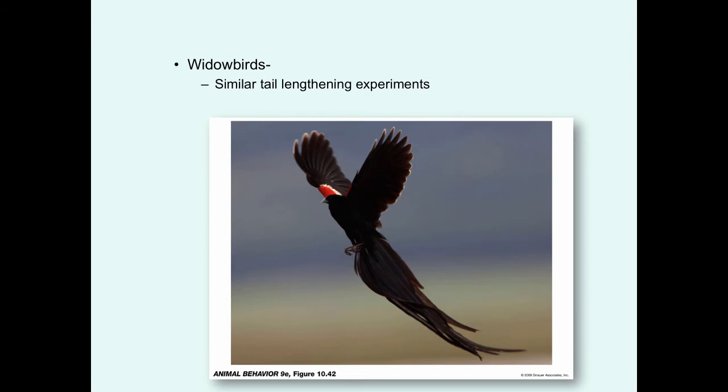Similar experiments have been conducted on widow birds, in which birds of comparable tail sizes were broken into different groups and tested. Males with the artificially lengthened tails were able to convince more females to mate. This is a species in which males mate with multiple females in their territory, and males with the longest tails were able to recruit more mates.